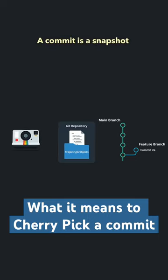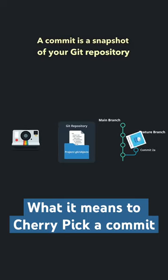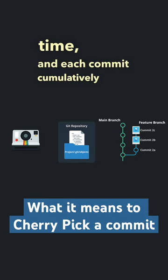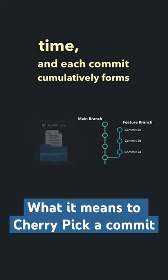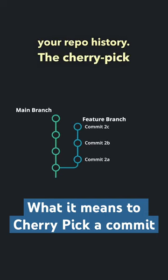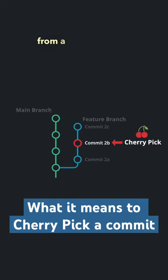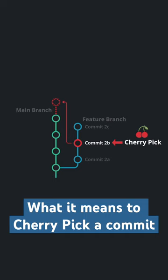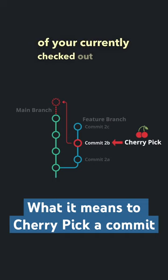A commit is a snapshot of your Git repository at one point in time, and each commit cumulatively forms your repo history. The cherrypick command takes changes from a target commit and places them onto the head of your currently checked out branch.